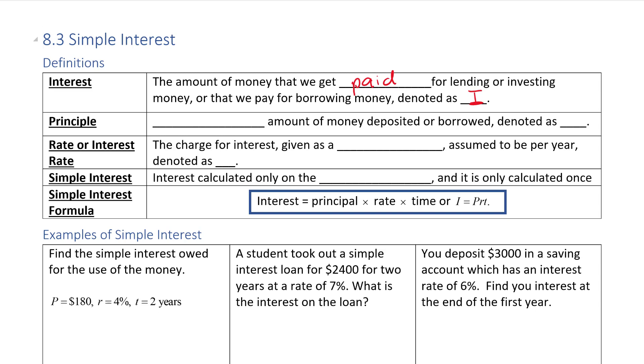The principal is the initial amount of money deposited or borrowed and we denote that as P, a lowercase P.